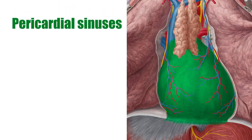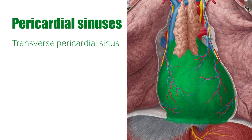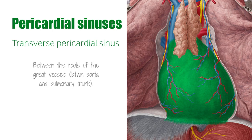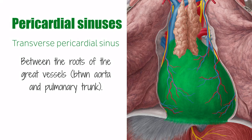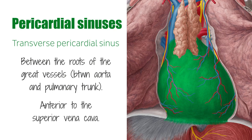Two sinuses exist within the pericardial cavity: the transverse sinus and the oblique sinus. The transverse pericardial sinus extends transversely across the pericardium, in between the roots of the great vessels, between the aorta and the pulmonary trunk, posterior to the ascending aorta and the pulmonary trunk, and anterior to the superior vena cava.